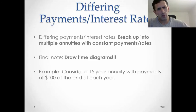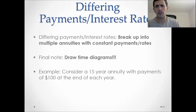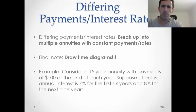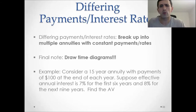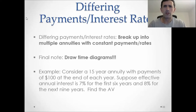Let me do a relatively straightforward example. We have a 15-year annuity with payments of $100 at the end of each year. The interest rate is 7% for the first six years and 8% for the next nine years. Let's find the accumulated value of this annuity.